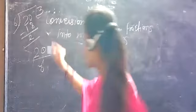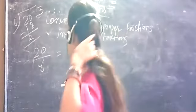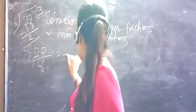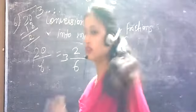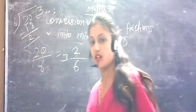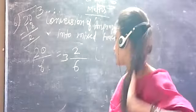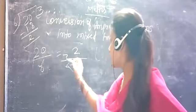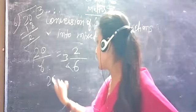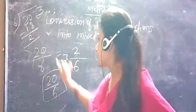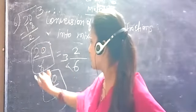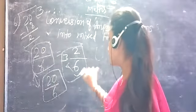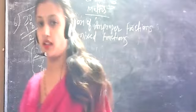So how do we write this? We write it as: denominator 6, quotient 3, remainder 2 — this is our mixed fraction. Now let's verify: 6 times 3 is 18, 18 plus 2 is 20 upon 6 — same as our original fraction. That means we have correctly changed the fraction.